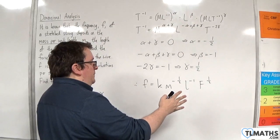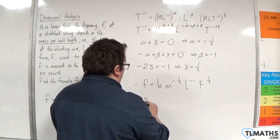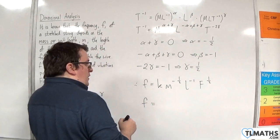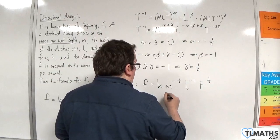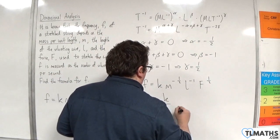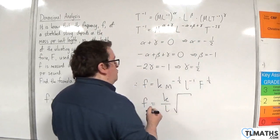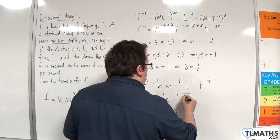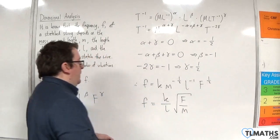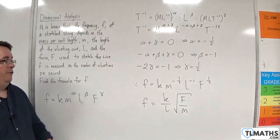Now we could re-write that as f equals k over l, and then times by the square root of f over m. And there's our formula.